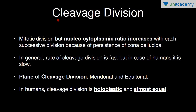Starting from cleavage division — it is a mitotic division, but the nucleocytoplasmic ratio increases with each successive division because of the persistence of zona pellucida. Because zona pellucida persists, the embryo that divides is the same size as the fertilized egg or zygote. With each division, nuclei increase but cytoplasm remains the same, so the nucleocytoplasmic ratio increases.